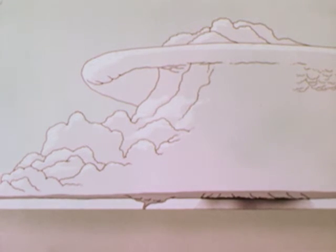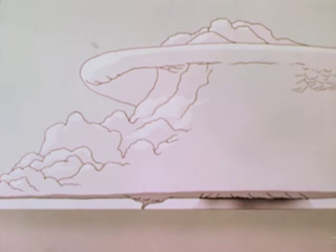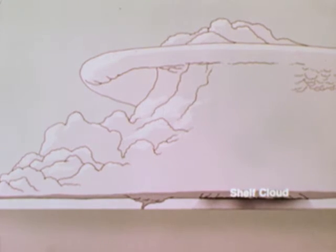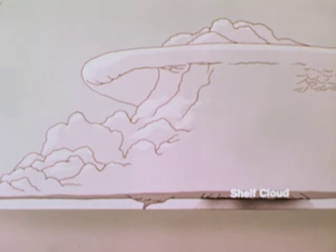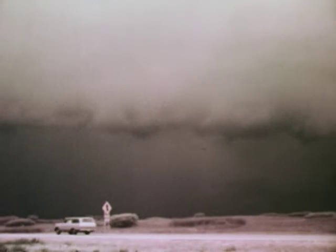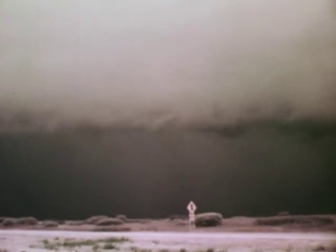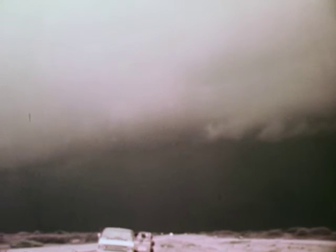Remember the structure of the storm. When a thunderstorm approaches, the first cloud feature that might catch your attention is the shelf cloud. The dark background behind the row of clouds is rain. In fact, it is the rain that cools the air and creates the outrush of wind, called the gust front, at the leading edge of the storm.